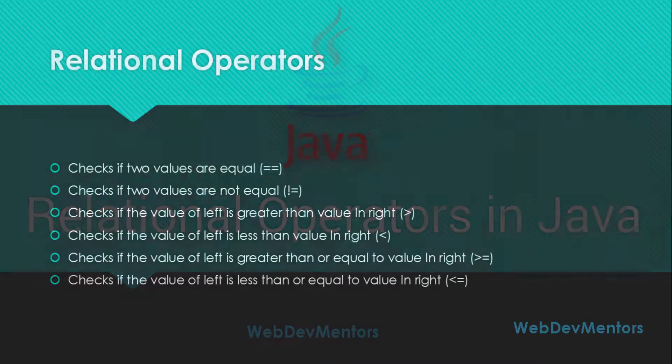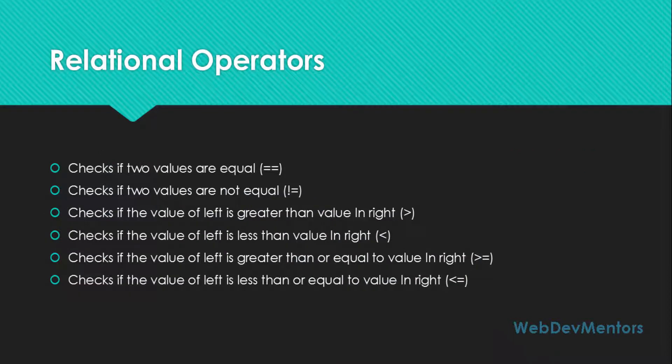Relational operators mainly check for the relation between two values or variables in an equation. So if you have a variable A and variable B, relational operators can be used to check if the values or variables are equal, greater than, less than, or less than or equal to.